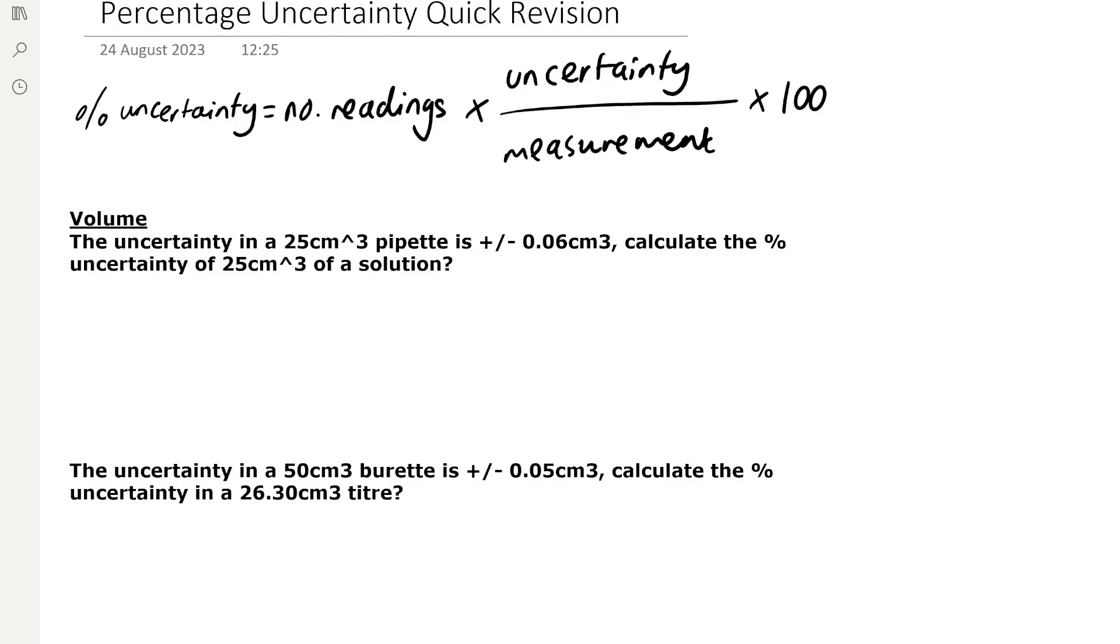We use the formula: percentage uncertainty equals the number of readings multiplied by the uncertainty, divided by the measurement, multiplied by 100. So the percentage uncertainty is simply a way of identifying the level of uncertainty in a reading.